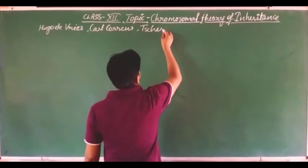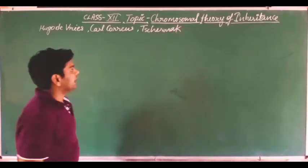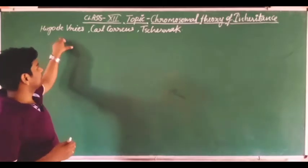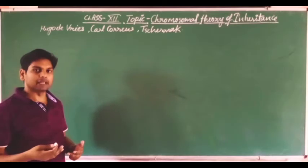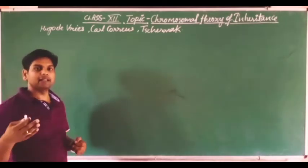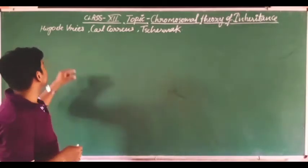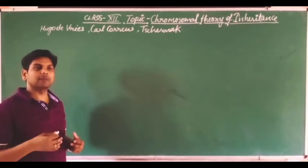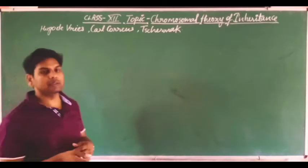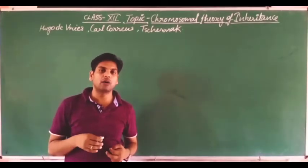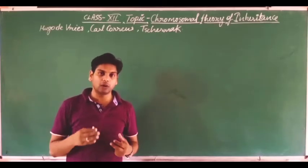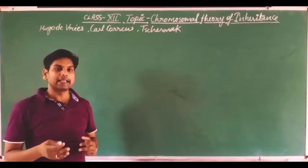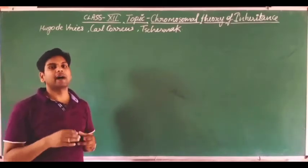In 1900, three scientists independently re-experimented on Mendel's work on pea plants and other organisms, and they concluded the same results that Mendel had concluded earlier. These three scientists formalized Mendel's conclusions as Mendel's Laws — the Law of Dominance, the Law of Segregation, and the Law of Independent Assortment — which had previously only been hypotheses.